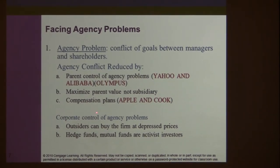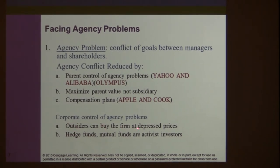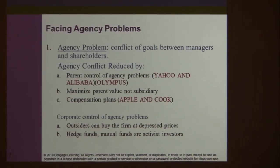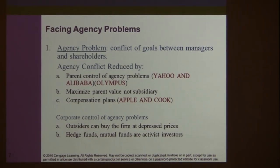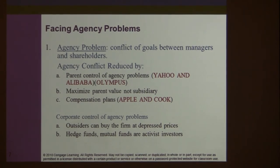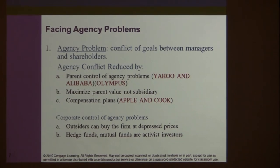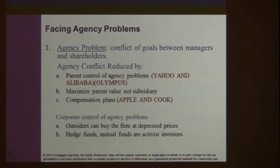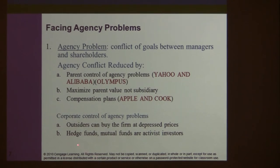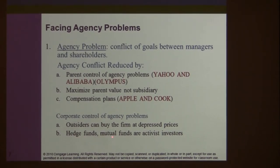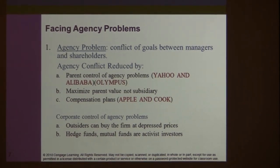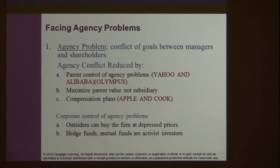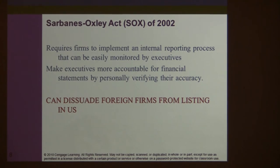Another way to reduce the agency problem is that outsiders can buy the firm at depressed prices when managers are underperforming. If a company's earnings fall and its stock price declines, large investors such as hedge funds and activist money managers see this as an opportunity to buy in at low prices and pressure management to improve performance.